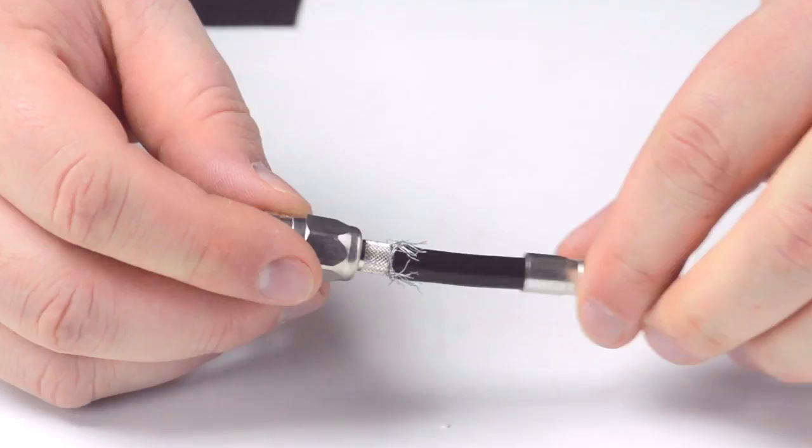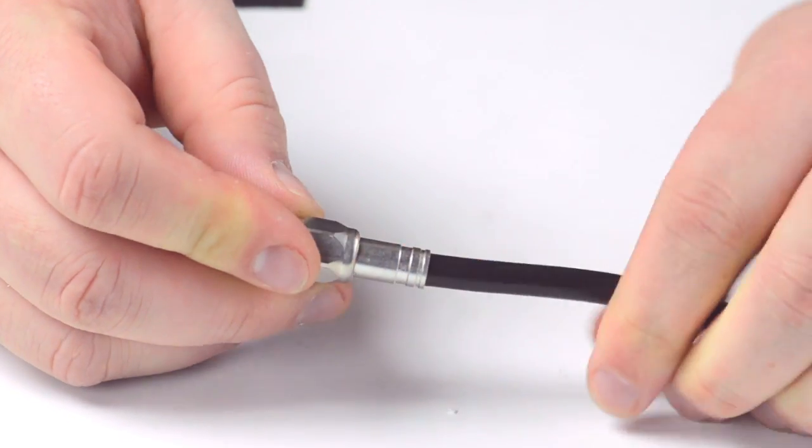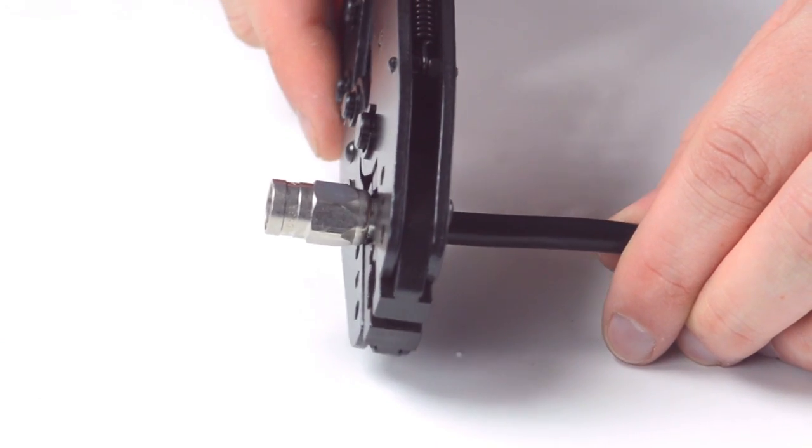Then slide up the ferrule to the base of the connector, folding the shield with it. Crimp the ferrule under the outer jacket to complete termination.